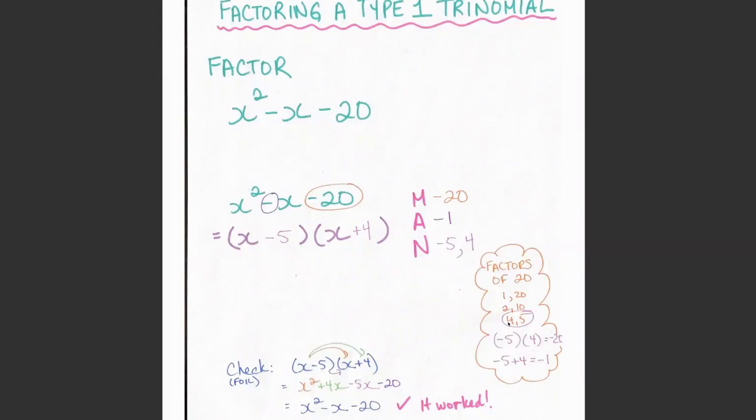But 4 does, because 4 times 5 is equal to 20. 5 times 4 is equal to 20, but that's already accounted for here. So here are my factors of 20.